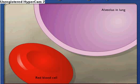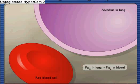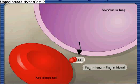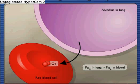Respiration serves as a means for the body to exchange gases with the atmosphere via the blood. The partial pressure of oxygen, PO2, in the air in the alveolar spaces in the lungs is greater than the PO2 in the blood, so oxygen diffuses into red blood cells from air in the lungs.